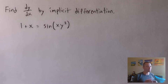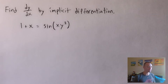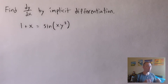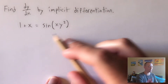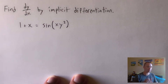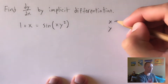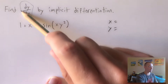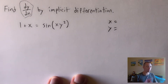To prove that implicit differentiation with trig is really not any different than regular implicit differentiation, we're going to find dy/dx using implicit differentiation with this equation: 1 plus x equals sine of x times y squared. We'll use the same trick from my other implicit differentiation videos — first writing down which letter is our variable and which is our function.